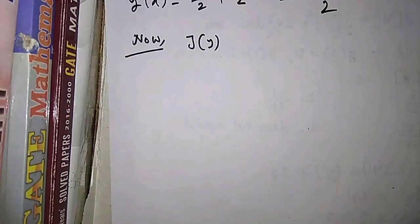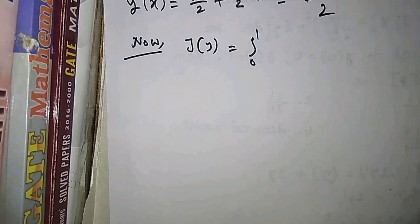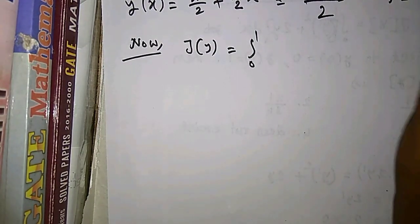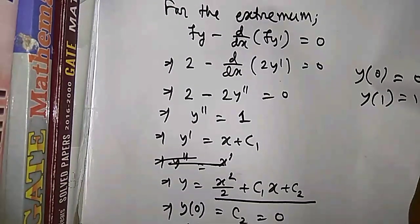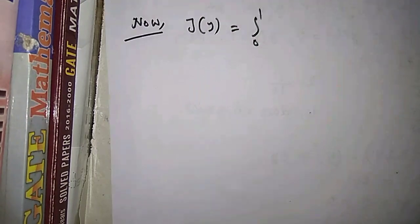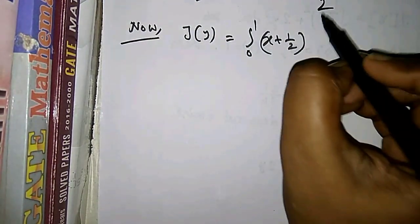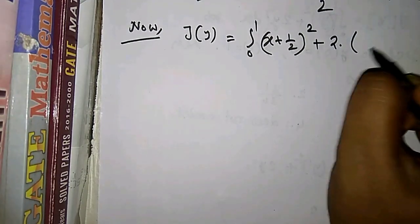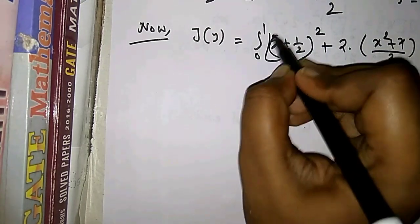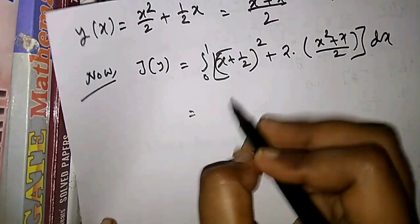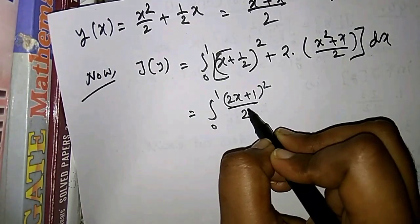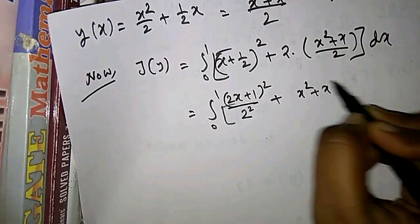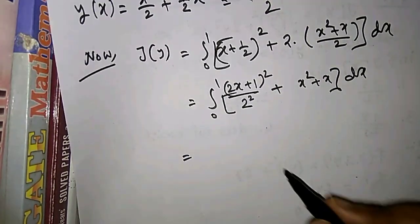Now computing J[y]: substituting y and y' into the functional. We have y' = x + 1/2, so the integral from 0 to 1 of y' squared plus 2y becomes the integral of (x + 1/2)² plus 2·(x² + x)/2, which equals (x + 1/2)² plus (x² + x).